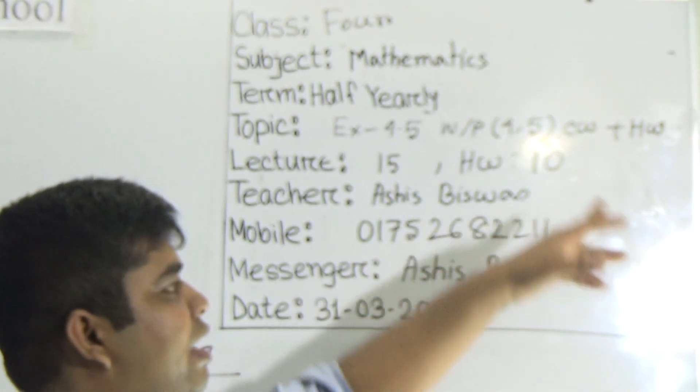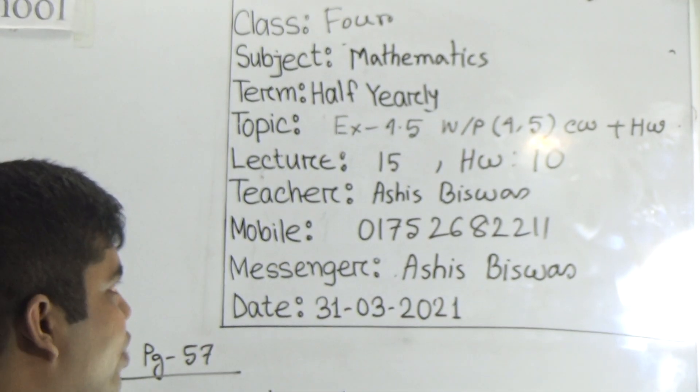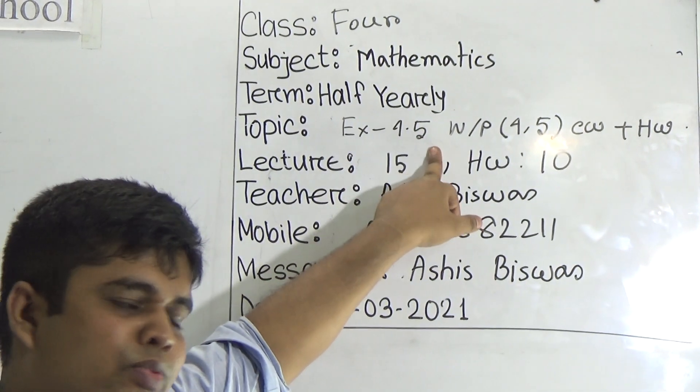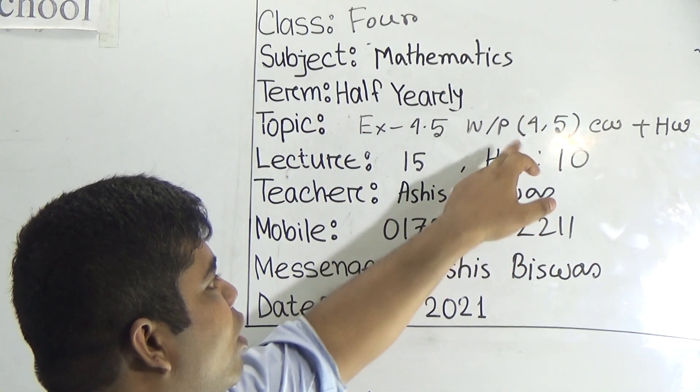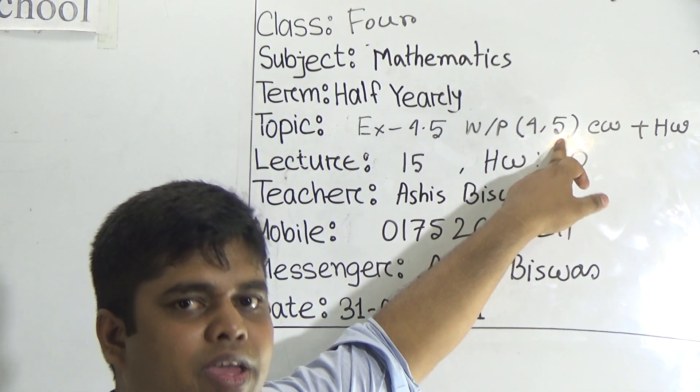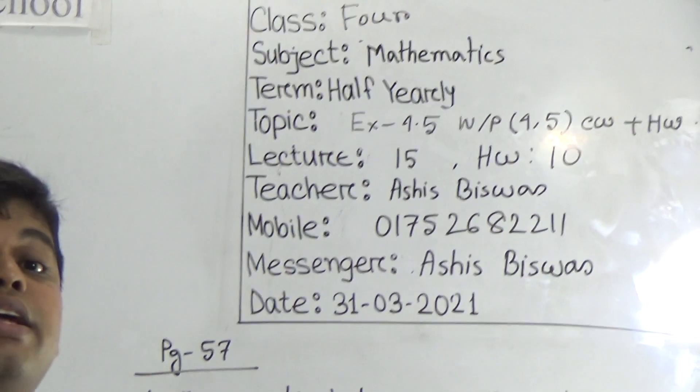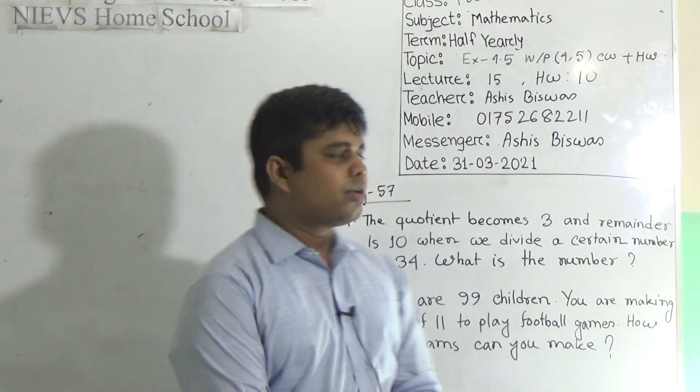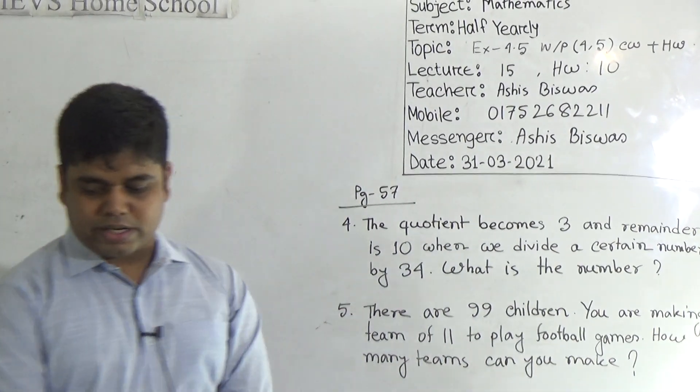So my dear students, let us start our class. Today is our lecture number 15 of half yearly and today's SW number will be 10. Our today's topic is Exercise 4.5. From Exercise 4.5 we shall solve problem number 4 and 5 as your CW. It is your SW also.